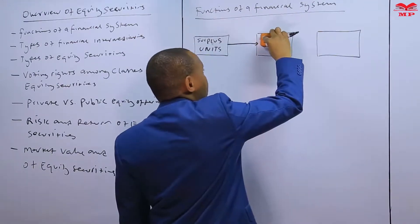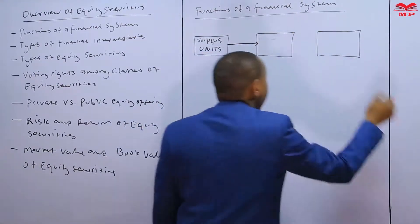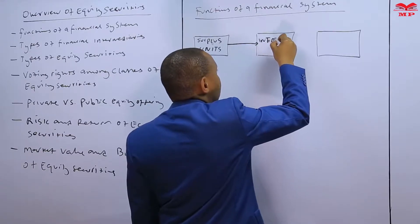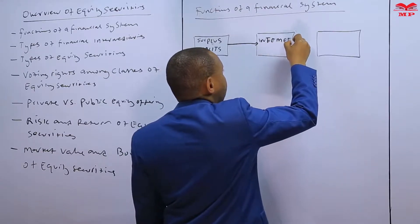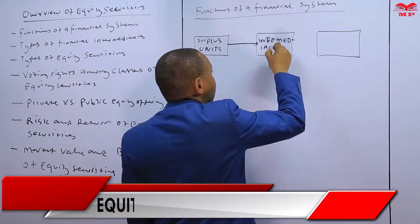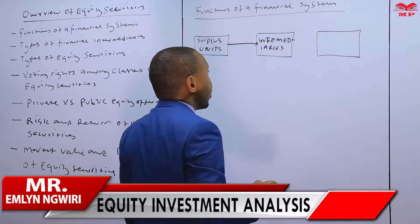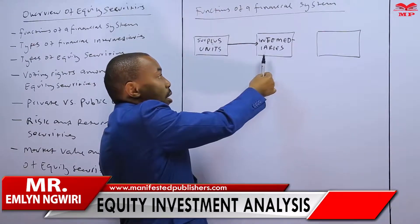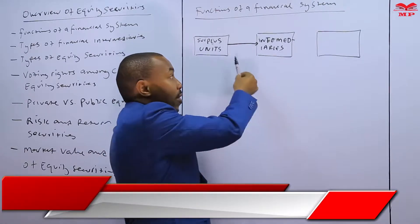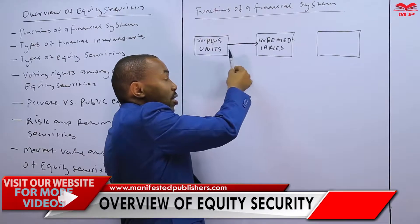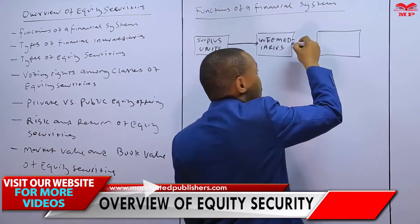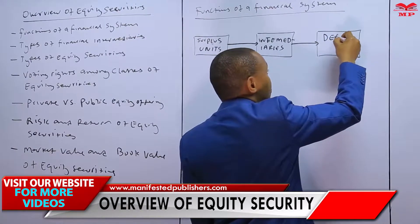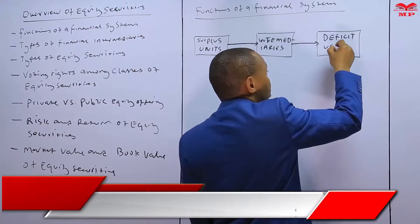Intermediaries — these are the institutions that act as middlemen. They are the middle ground between the surplus units and the deficit units, which is the next rectangle.